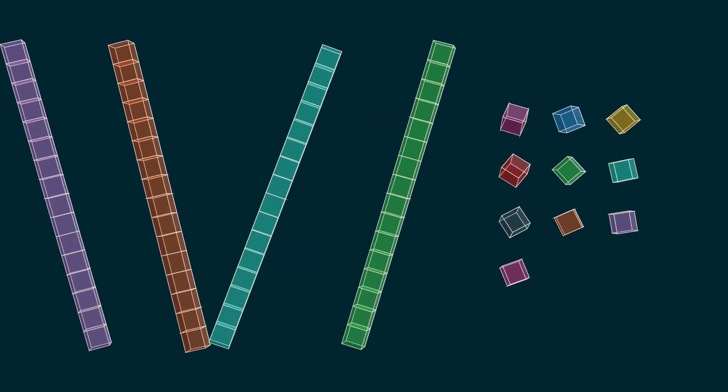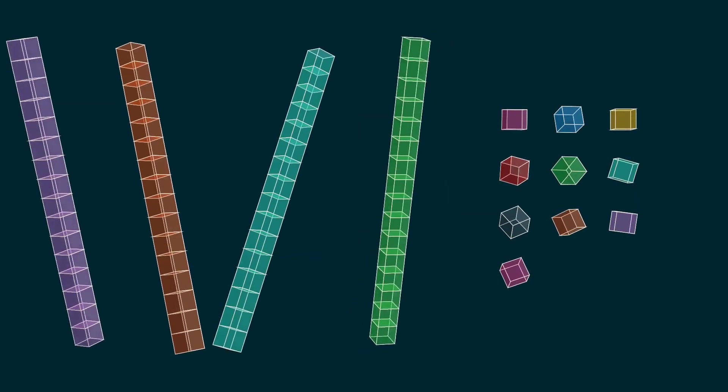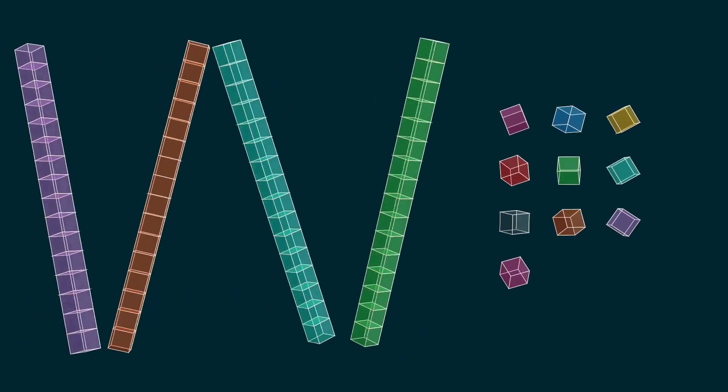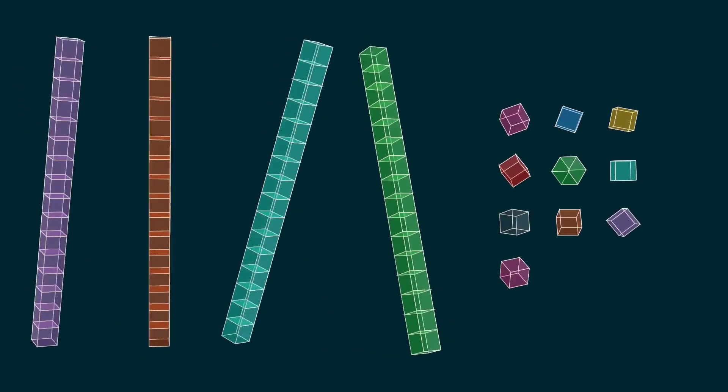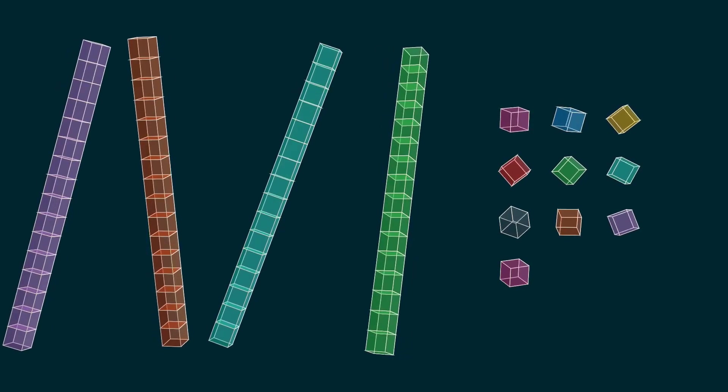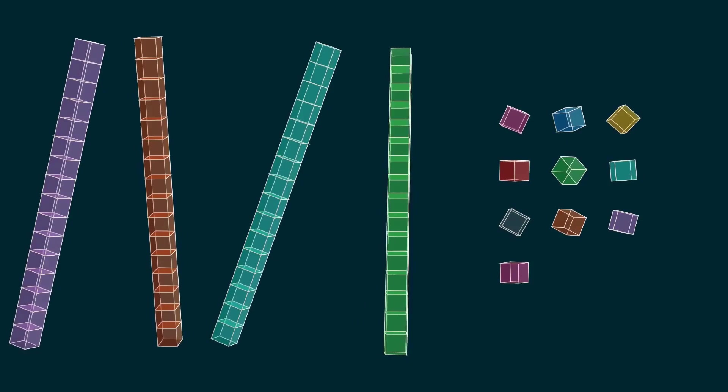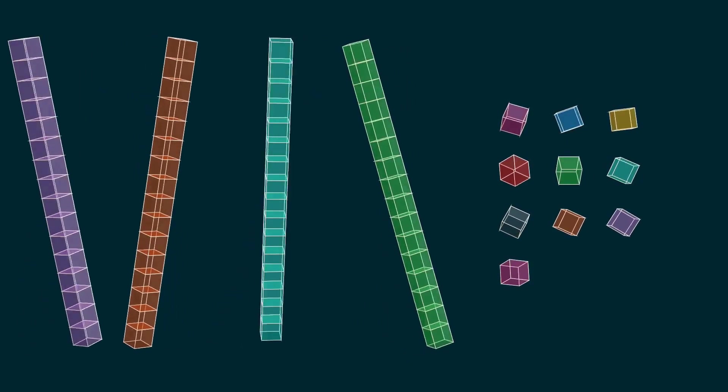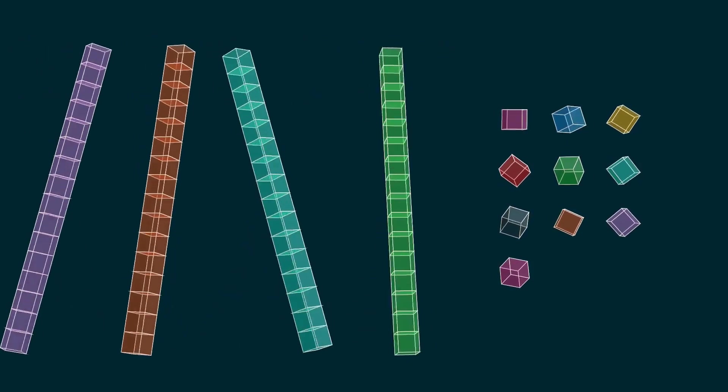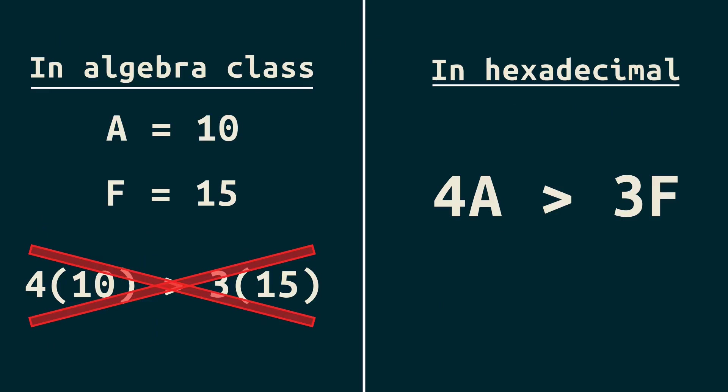Now, this should be simple. Actually, you learned everything you need to know to understand this in first grade, if not sooner. But you may still be scratching your head. Why is this hard when it should be easy? I'll tell you why, and we'll make it easy. And of course, we'll learn exactly how hexadecimal works and why 4A is definitely bigger than 3F. Let's get started.